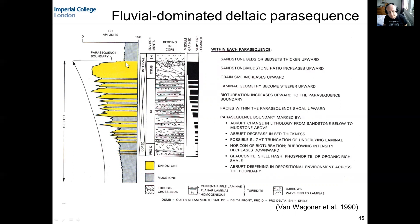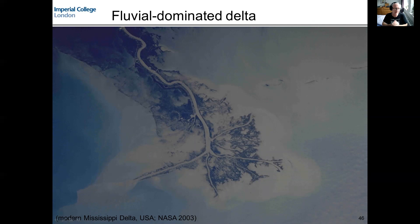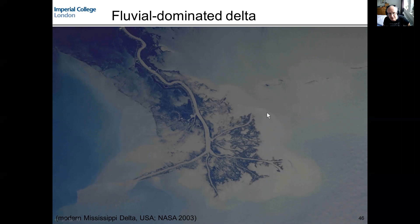The type example of a fluvially dominated delta is the modern Mississippi delta. Here we can see one channel — partly maintained in position through man-made engineering — branching downstream into multiple smaller channels, as expected in river-dominated deltas. You can also see lots of muddy sediment being carried in plumes out of those river mouths.